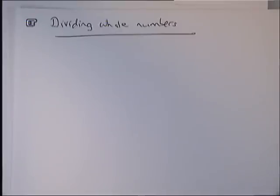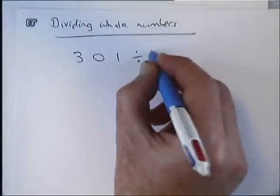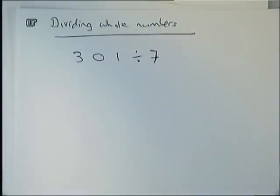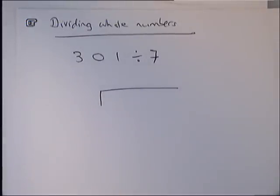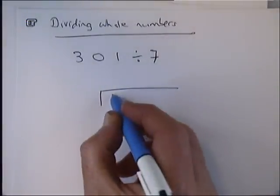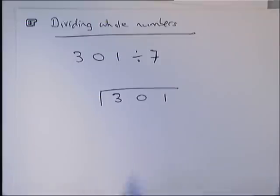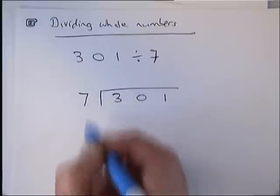This video is about dividing whole numbers. The example we're going to look at is 301 divided by 7. The usual way to do this is to draw this sort of shape—some people call it the bus stop method because it looks a bit like a bus stop. This number 301, the first number, comes underneath and the 7, which is the number you're dividing by, comes over here.